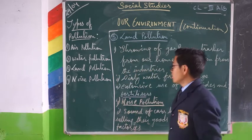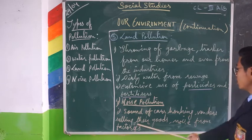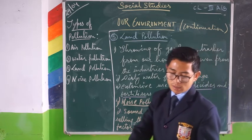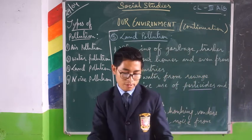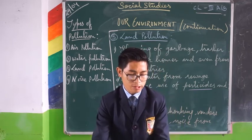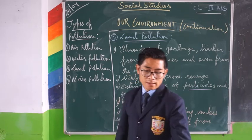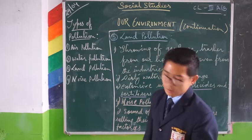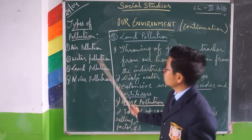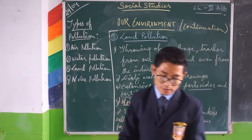So we all know what leads to noise pollution: sound of car honking, vendors selling their goods, noise from factories, cars — everything leads to noise pollution. Today we learned that there are four types of pollution: air pollution, water pollution, land pollution, and noise pollution.